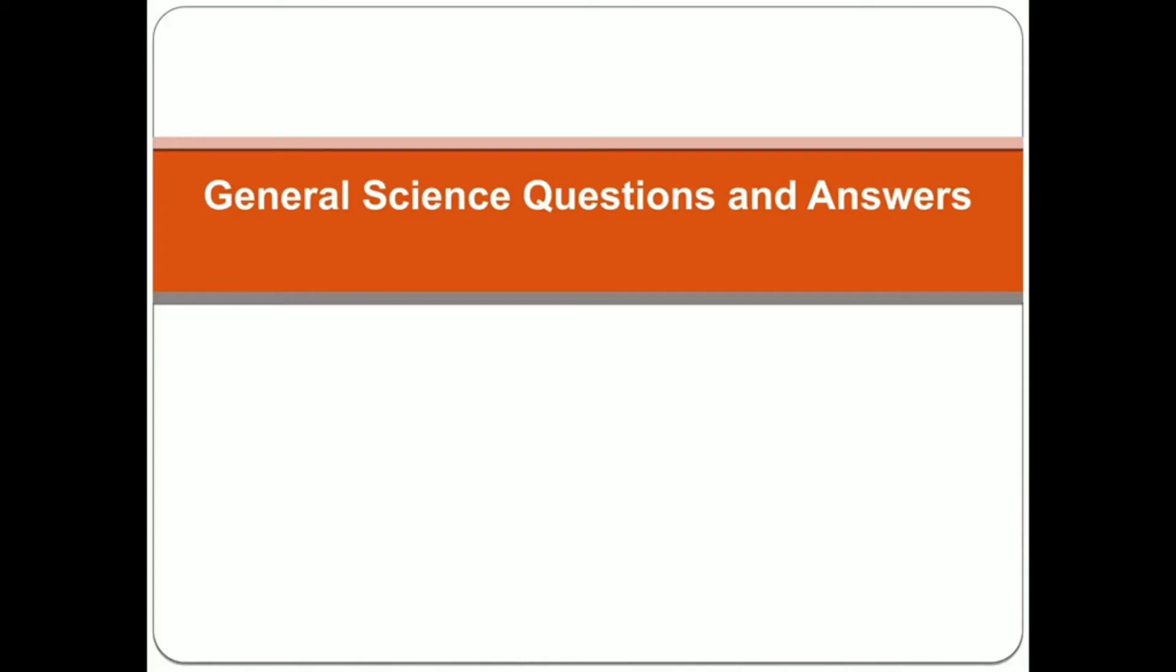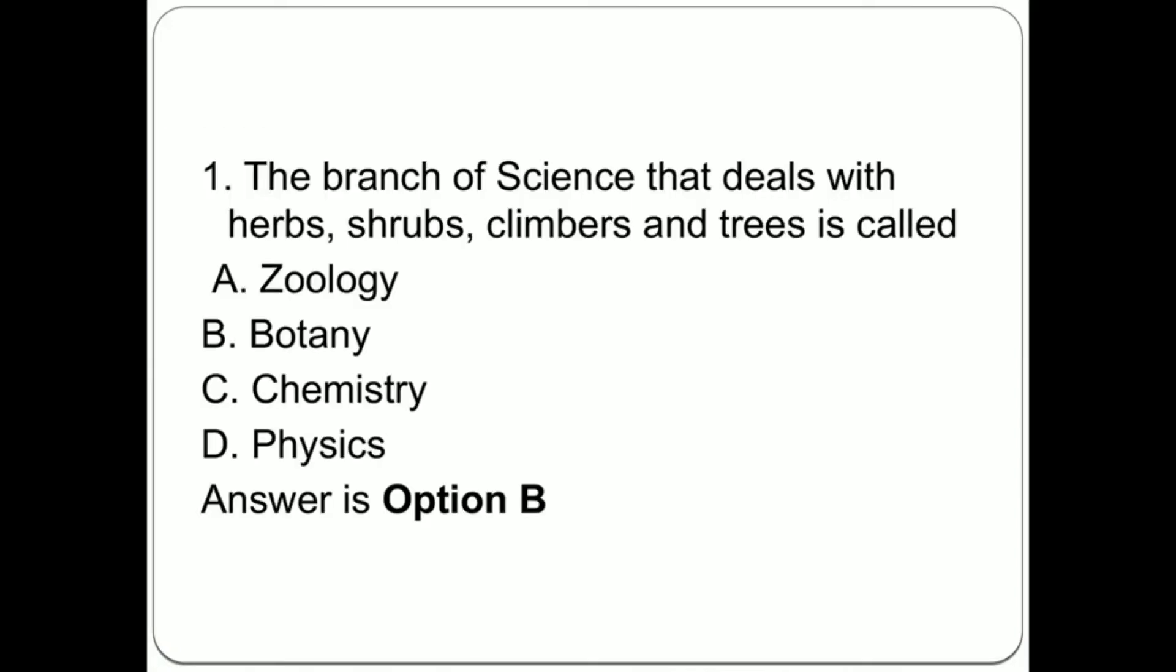General Science Questions and Answers. Question 1: The branch of science that deals with herbs, shrubs, climbers and trees is called: A. Zoology, B. Botany, C. Chemistry, D. Physics. Answer is option B, Botany.